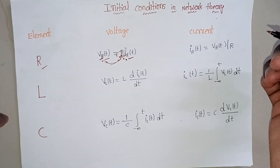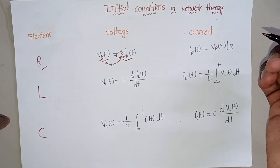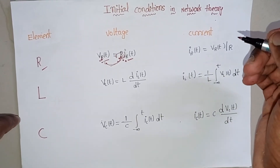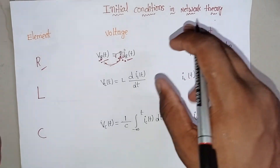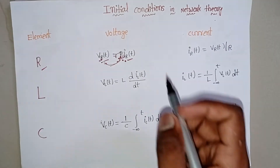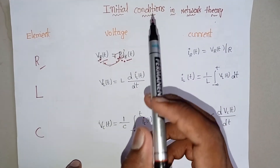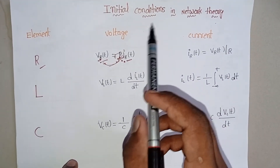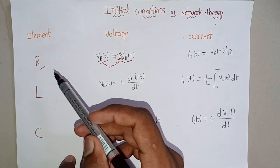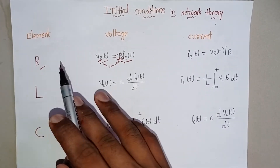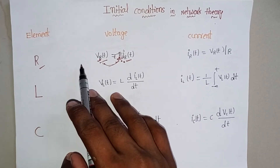Hello friends. In the last video we discussed about transient state and steady state. In this video we will go to see initial conditions and final conditions of circuit elements — those are RLC circuit elements.